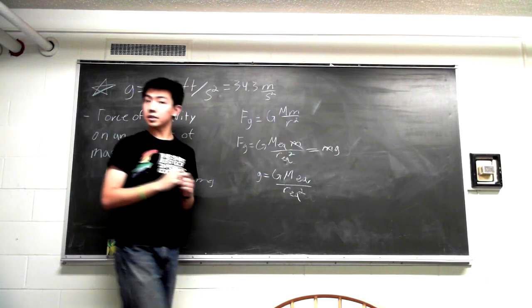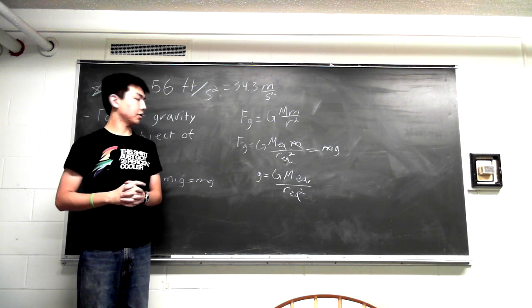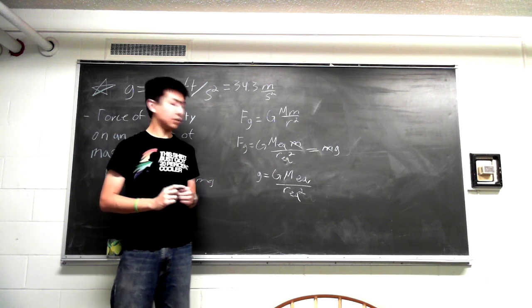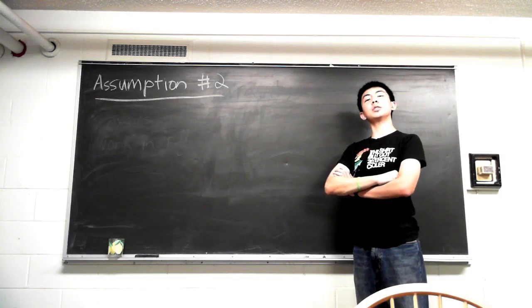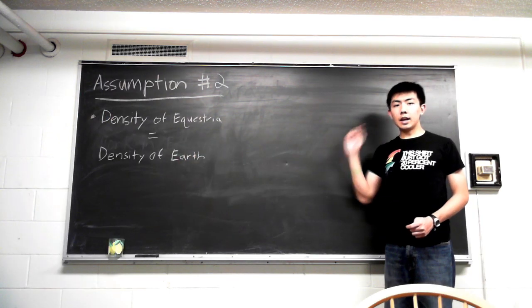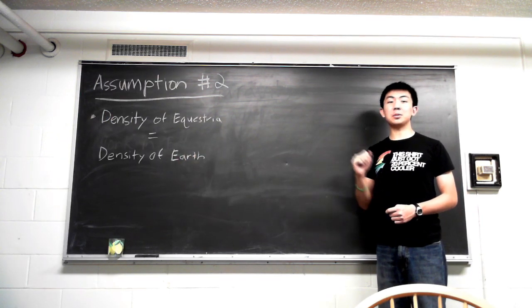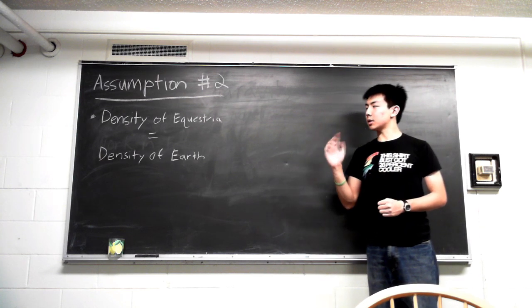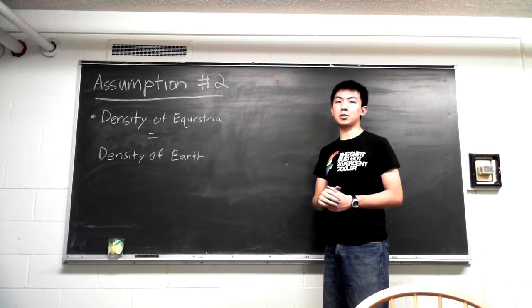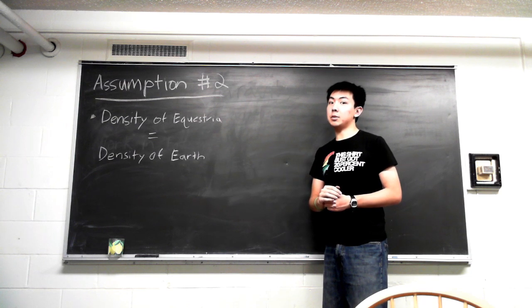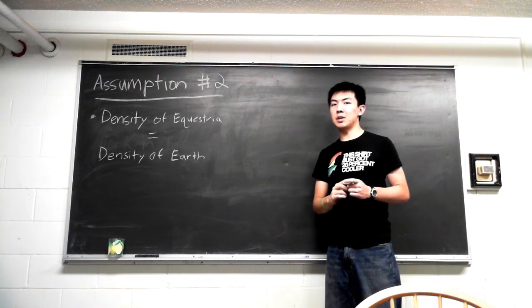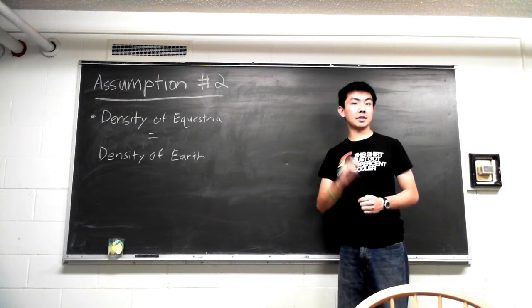Unfortunately, this equation has two unknowns, so we can't solve it by itself. However, if we make another key assumption, we can find the values of both the mass of Equestria and the radius of Equestria. Assumption number two: The average density of the equestrian planet is equal to the average density of Earth. Now, since Equestria is a life-harboring planet, I believe that this assumption probably does not deviate that far from the truth. Now, this assumption will allow us to draw a relationship between the mass and volume of Equestria and the mass and volume of Earth, allowing us to solve that previously unsolvable equation.